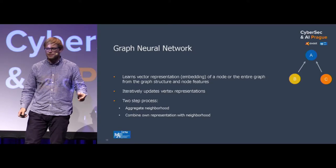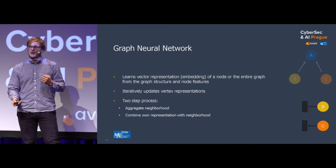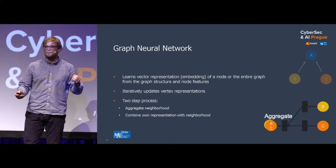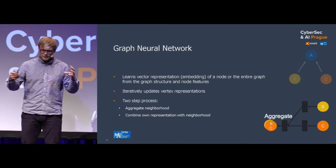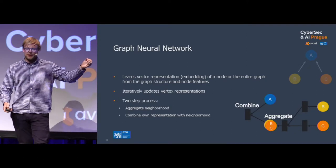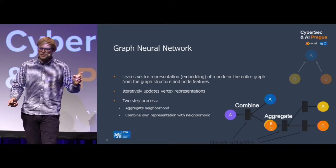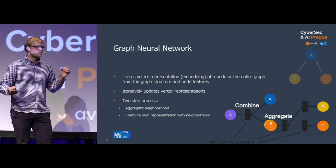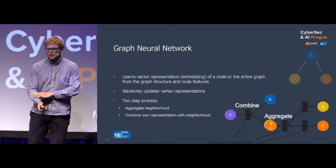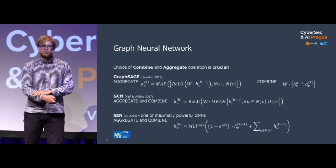This process is repeated iteratively, and you can see how gradually it integrates larger and larger neighborhoods. For a simple example: let's assume we have a graph of A, B, C. If we want a new representation for node A, we first transform representations of B and C, aggregate them together — because that's how we get the neighborhood of A — and then combine it with the representation of A to get a new one. This process is run iteratively, and those transformation steps are typically some kind of neural network or other functions.